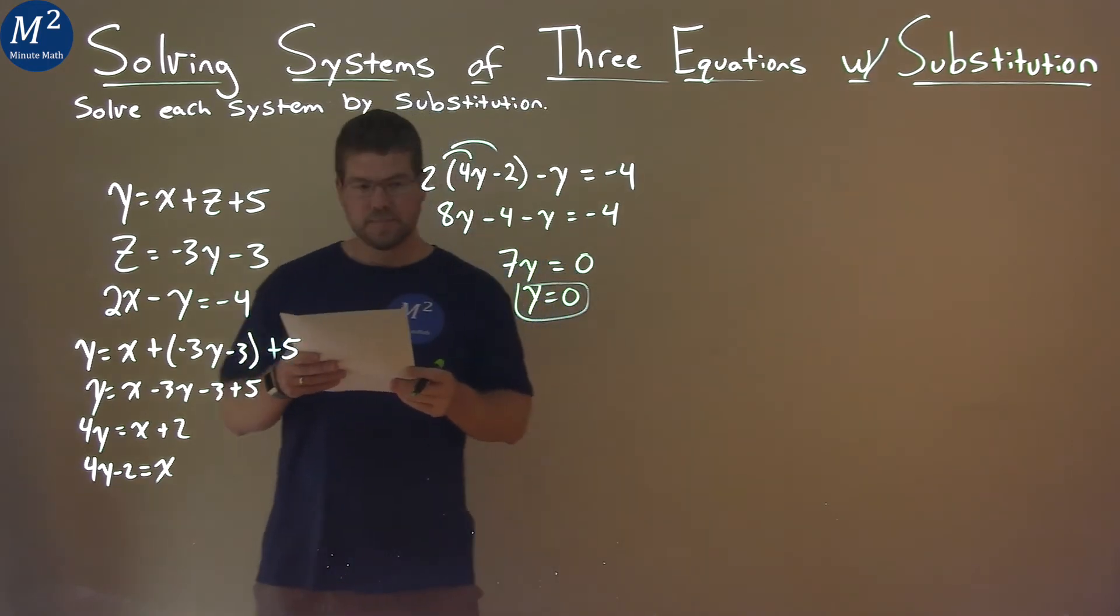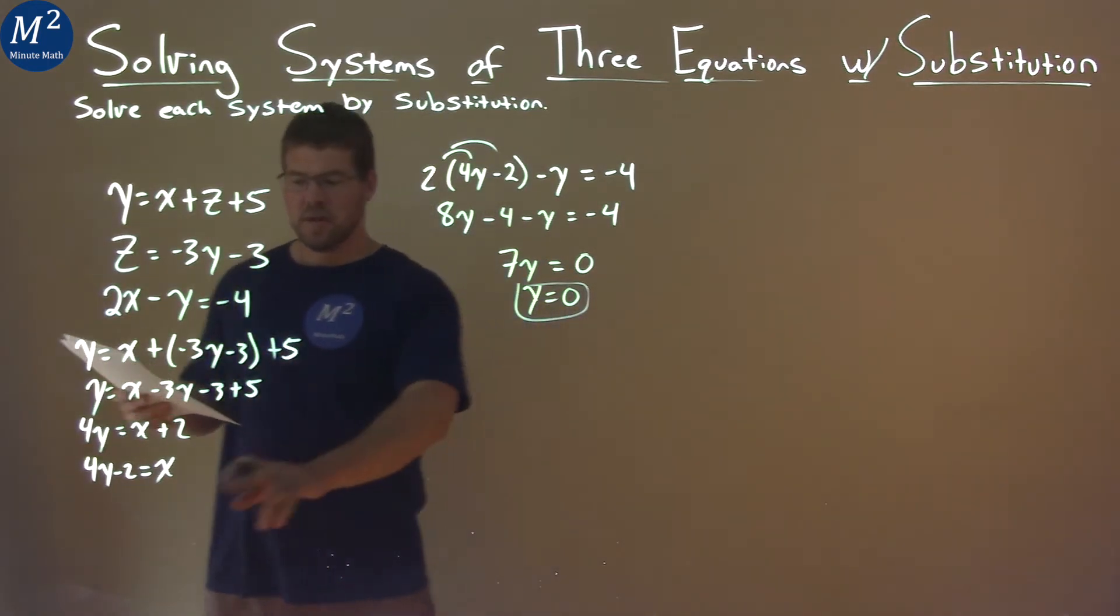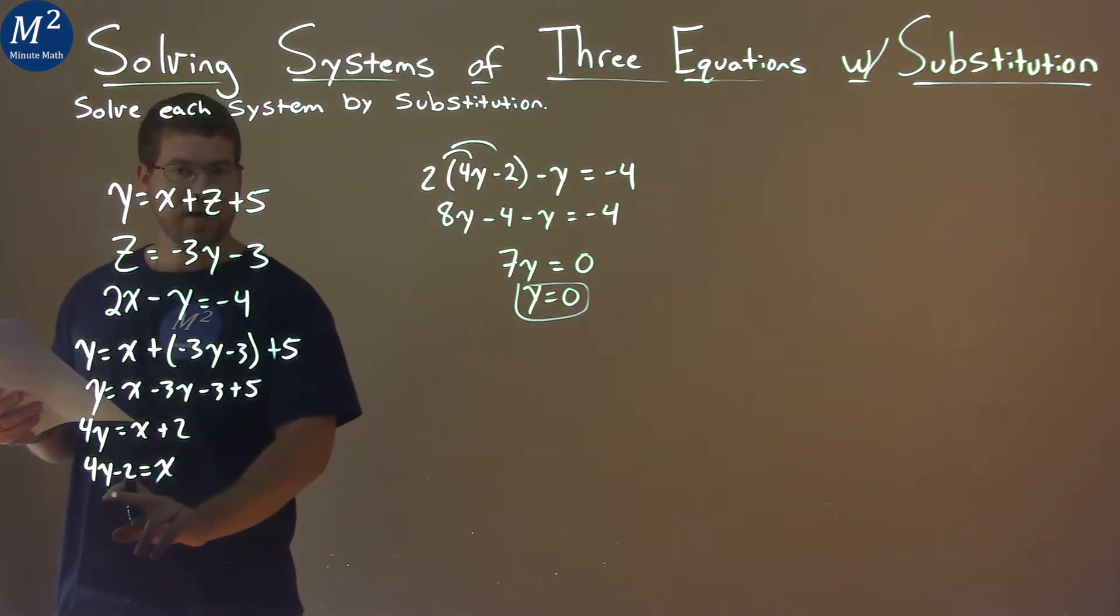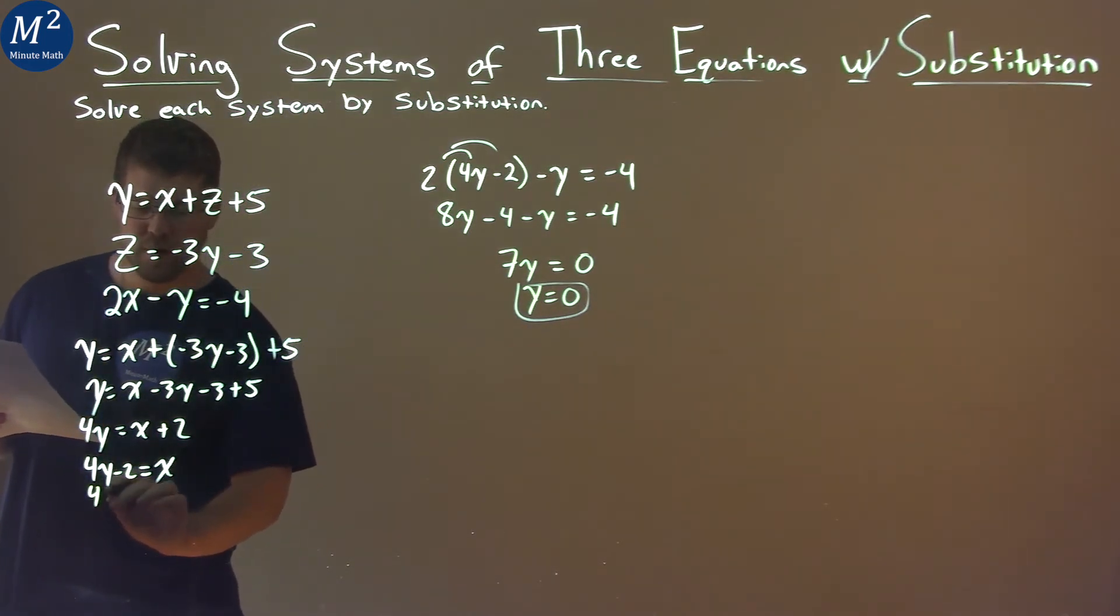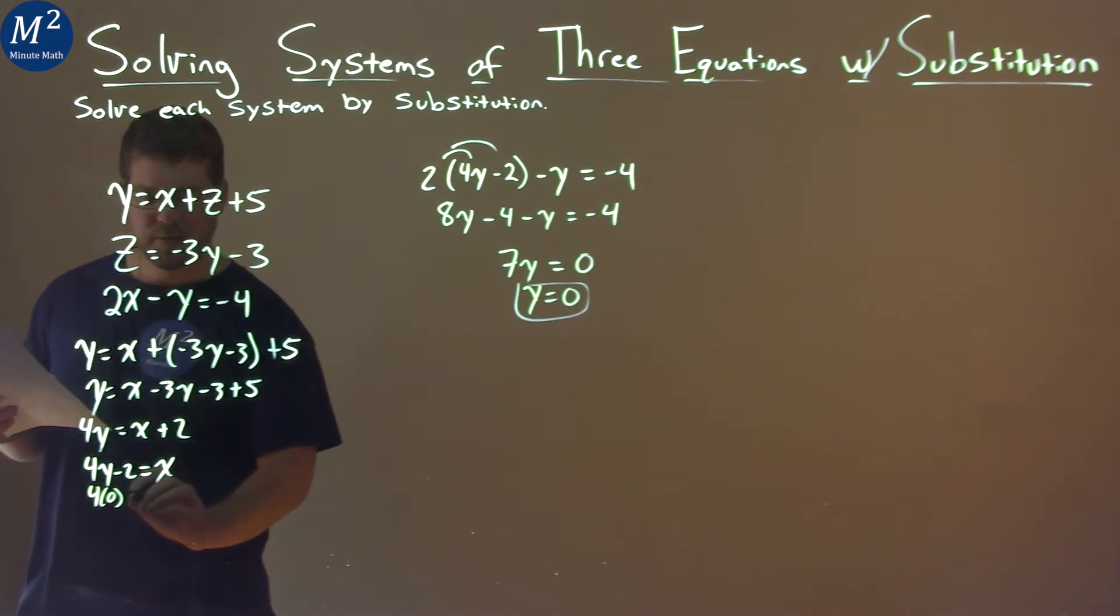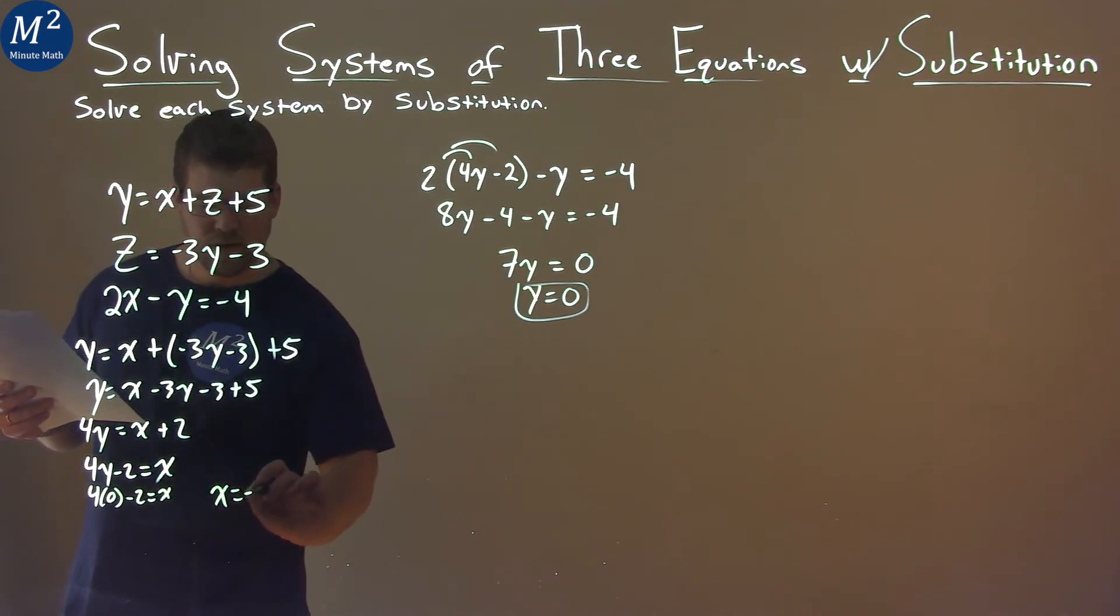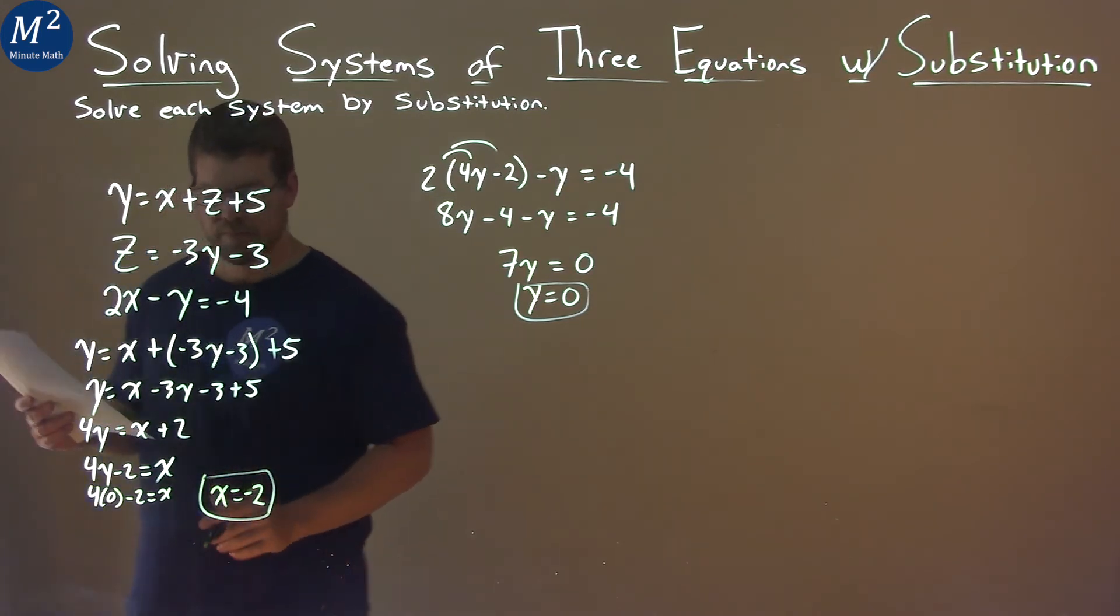So we have y equals 0 here. And with that information, we can easily solve for x. We're going to take y equals 0 and go back to this equation and put 0 in for y. So 4 times 0 minus 2 equals x. Well, 4 times 0 is 0, so we get x equals negative 2.